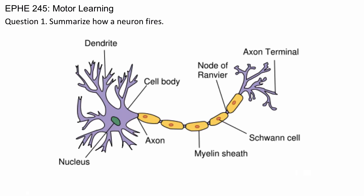Summarize how a neuron fires. Your typical neuron looks something like this. At one end there are the dendrites — this is where information comes in.